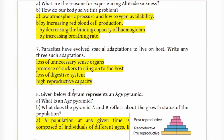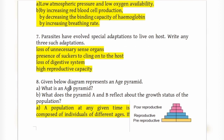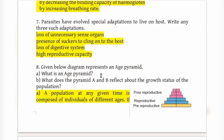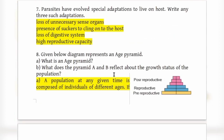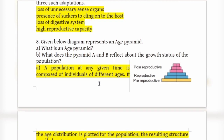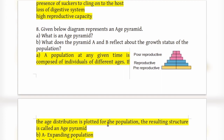An age pyramid represents the age distribution of a population at any given time. If the age distribution is plotted for a population, the resulting structure is called an age pyramid. A population is composed of individuals in pre-reproductive, reproductive, and post-reproductive age groups.